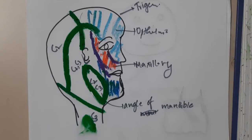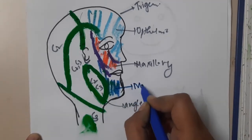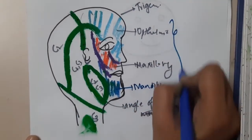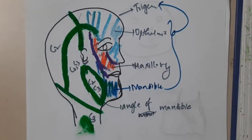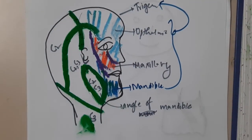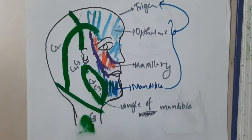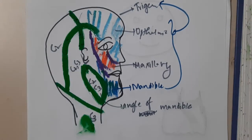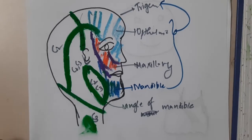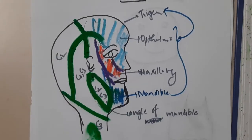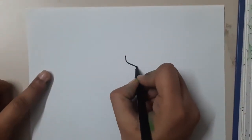Ophthalmic, maxillary, and mandibular nerves are the three branches of the trigeminal nerve. Now we will look at the specific branches of each of these nerves, and I will draw another diagram to illustrate them.